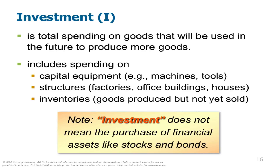This is a big one and a big misunderstanding by students. Investing is not going down to Edward Jones or logging into your TD Ameritrade account and buying some stocks or bonds. That's what you would do in your personal life, but that's actually finance. Investment for GDP is the capital goods. So could I, on this GDP quiz, ask you what are the three components of investment? I certainly could, and you would answer capital equipment, structures, and inventories.